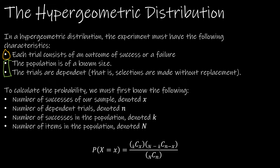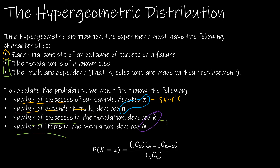This one is the most complicated in terms of the number of variables we need to define. The way I like to think of it: x and n go together — that's lowercase x, lowercase n. Then k and capital N go together. We're talking about the number of successes out of the number of trials in the sample, and then the number of successes out of the number of items in the population.